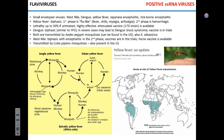Now we move from negative-strand RNA viruses to positive single-strand RNA viruses — the flaviviruses. Let's talk about the most famous ones: West Nile, Dengue, and Yellow Fever. What's common among all these, plus Japanese encephalitis and tick-borne encephalitis? All are transmitted by biological vectors — the first four by mosquitoes, and tick-borne encephalitis, as you'd expect, by ticks.